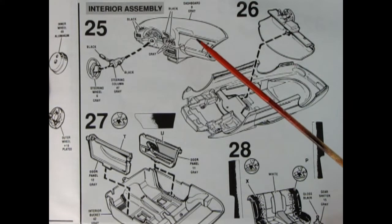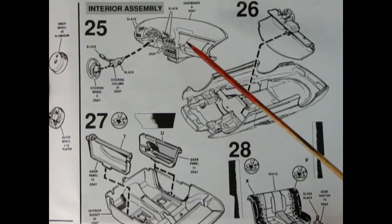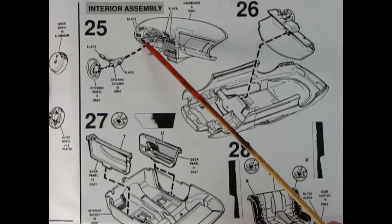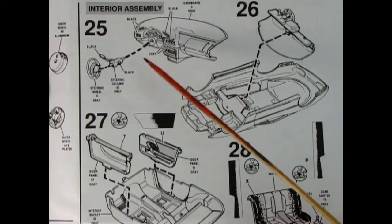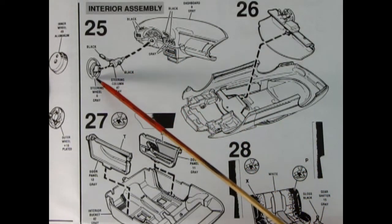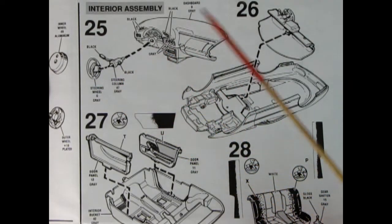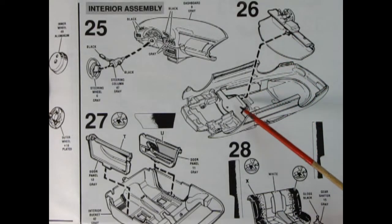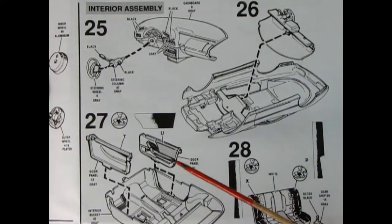Next up we have our interior assembly and here you get the wonderful Camaro dashboard and all the little paint that you need inside here. And then there's our steering column, our steering wheel, all that gets attached and then turned over and put into the body upside down. Now here in panel 27 we see our interior bucket and the door panels. This is a decal that goes onto the door panels and all of this pops into place very nicely.